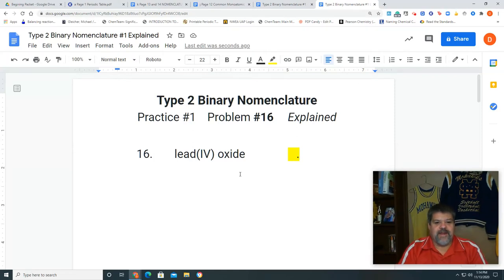Finally, guys, we got to our Type 2 Binary practice sheet, Number 1, final problem, problem 16. So we're going to look at it, and we have the name of lead (IV) oxide, and we need to figure out what the formula for lead (IV) oxide is.